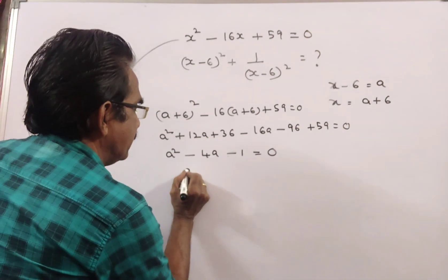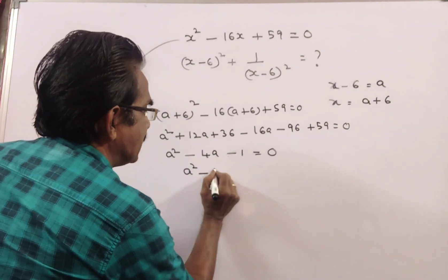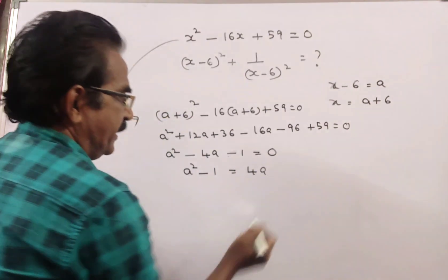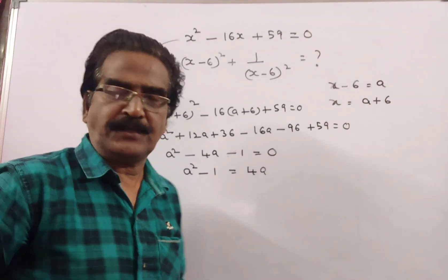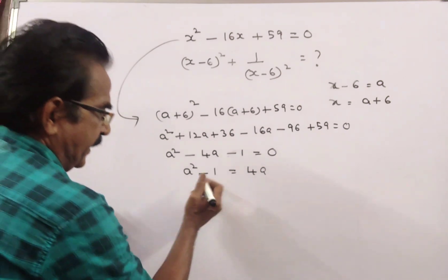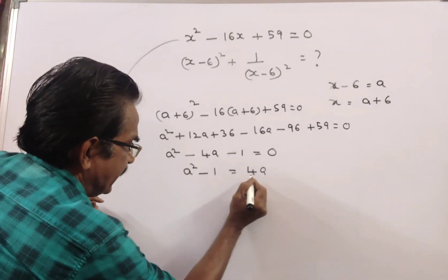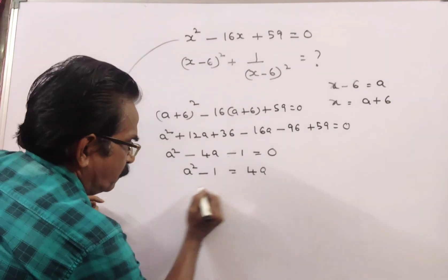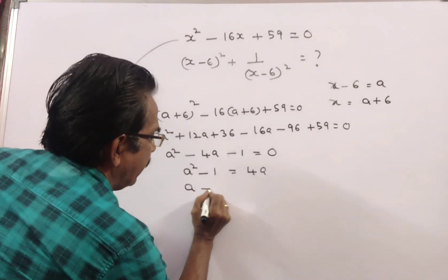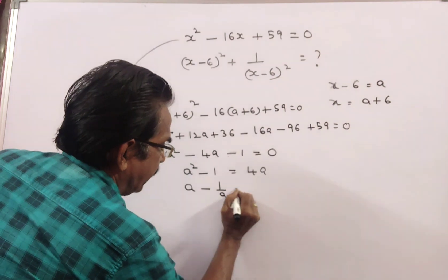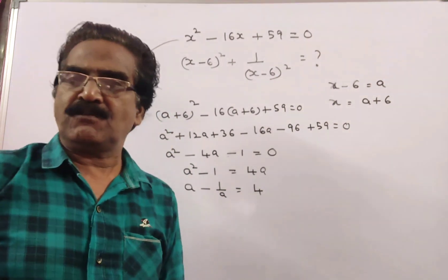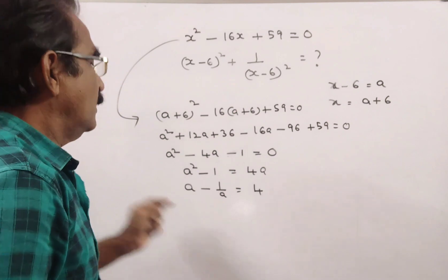It implies a² minus 1 is equal to 4a. Dividing both sides by a, this equation reduces to a minus 1 by a is equal to 4.